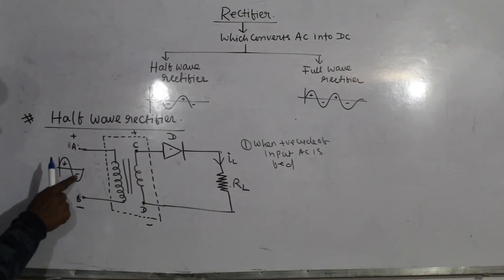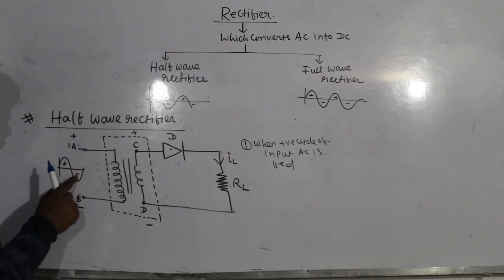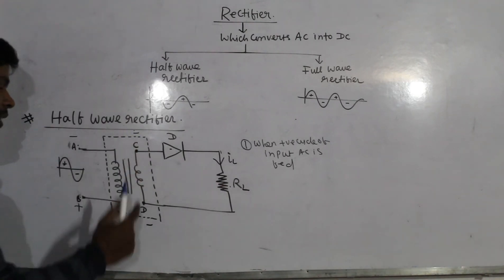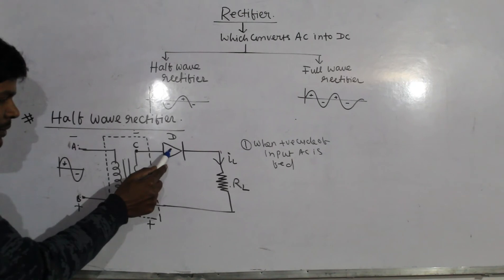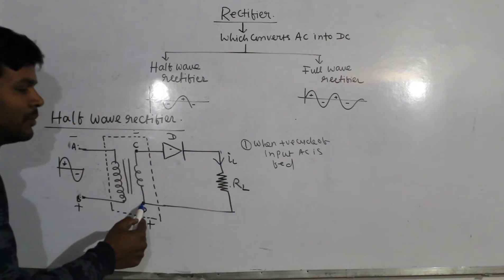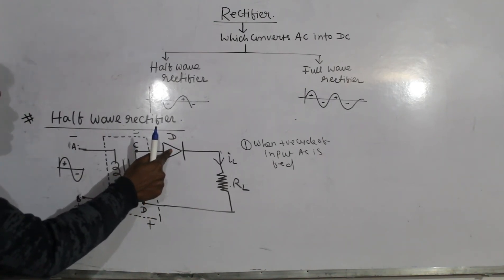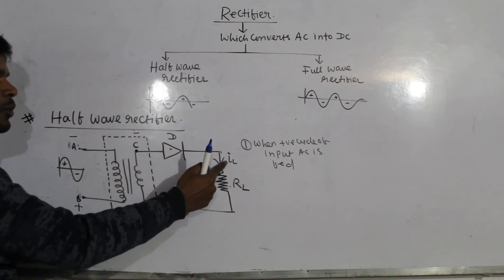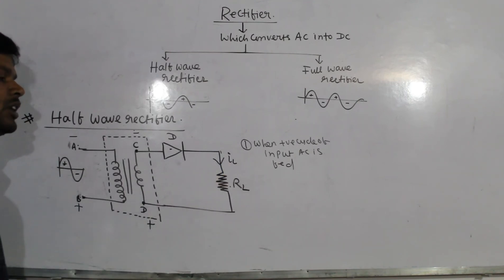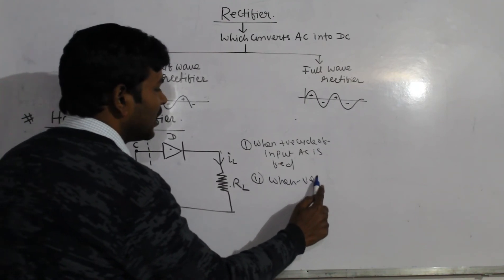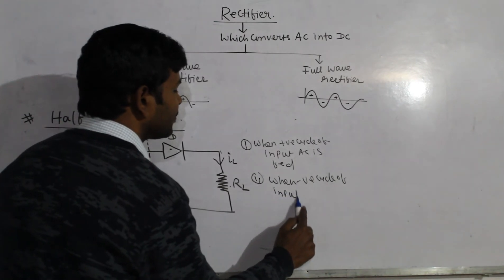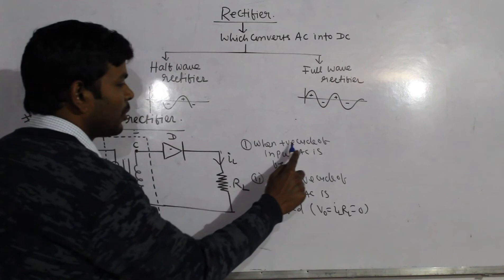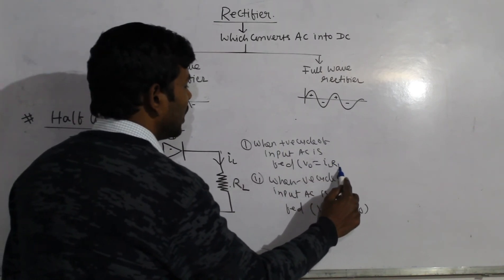When the negative cycle of input AC is fed between terminals A and B, A becomes negative and B becomes positive. Terminal C becomes negative and terminal D becomes positive. The P-type semiconductor is connected with the negative terminal and the N-type semiconductor with the positive terminal — this is reverse biasing. In reverse biasing, the diode does not conduct, so there is no output current IL and the output voltage V₀ = IL × RL = zero.